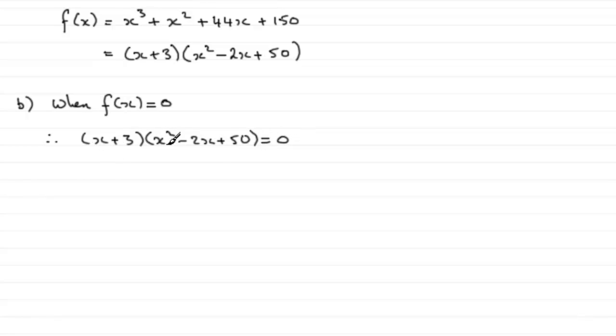Which means each of these factors would equal zero. In other words, x plus 3 would equal zero, or we've got this quadratic factor x squared minus 2x plus 50 that's going to equal zero. Well clearly from this one, x is going to equal minus 3 if we subtract 3 from both sides.